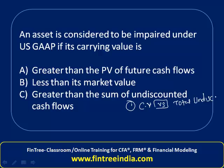For example, if the carrying value is 100 and all the future cash flows the firm is expected to generate total 120, since the undiscounted cash flows are higher, we do not impair the asset. However, if that total is 90, then step one is triggered and we decide that the asset is to be impaired.